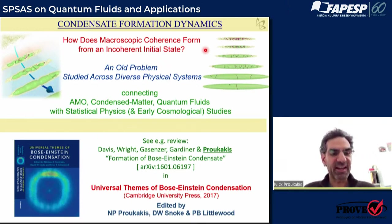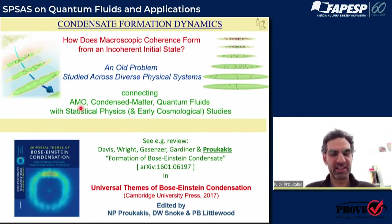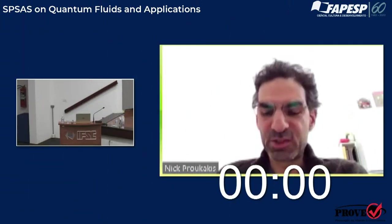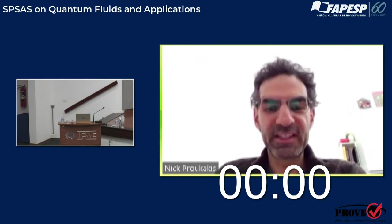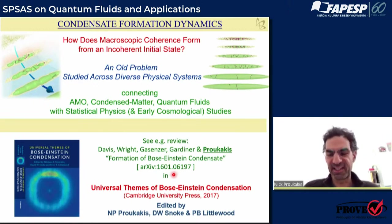This is a very standard and old problem encountered across many different branches of physics. Beyond atomic, molecular, and optical physics, it connects to condensed matter — in particular quantum fluids — and it's a statistical physics problem. Interestingly, as I will explain, its origin was from early cosmological studies, even though this is much more an AMO and condensed matter problem these days. If you would like to find out a little bit more, this review has all the key issues of the problem, and the understanding hasn't changed much even though there have been some developments since.